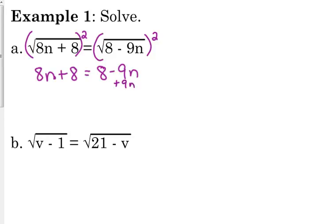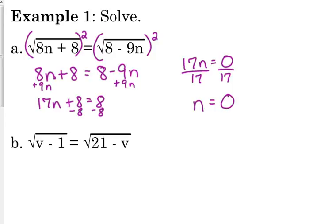Add 9n to both sides, so we get 17n plus 8 is equal to 8. Subtract 8 from both sides, we get 17n is equal to 0. Divide by 17, so n is 0.